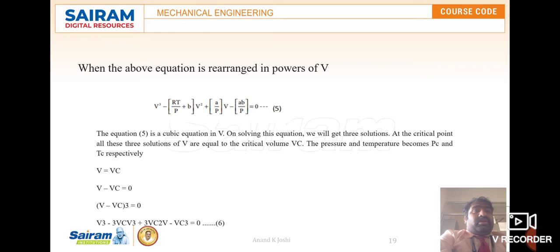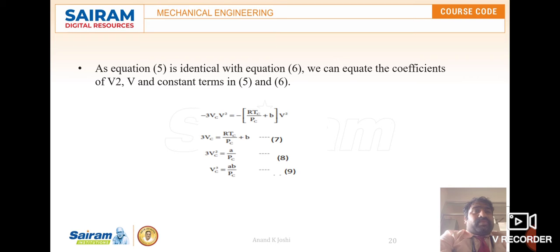At the critical point, all three solutions of V are equal to the critical volume Vc, where pressure and temperature become Pc and Tc respectively. So V = Vc, and (V − Vc)³ = 0, which expands to: V³ − 3Vc·V² + 3Vc²·V − Vc³ = 0. This is equation number 6. We can now compare and equate coefficients of V², V, and the constant terms in equations 5 and 6.